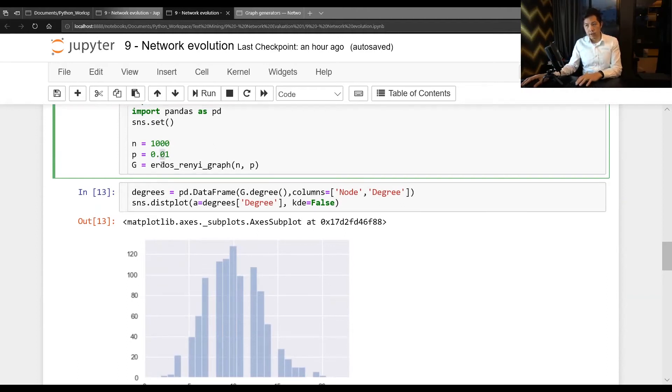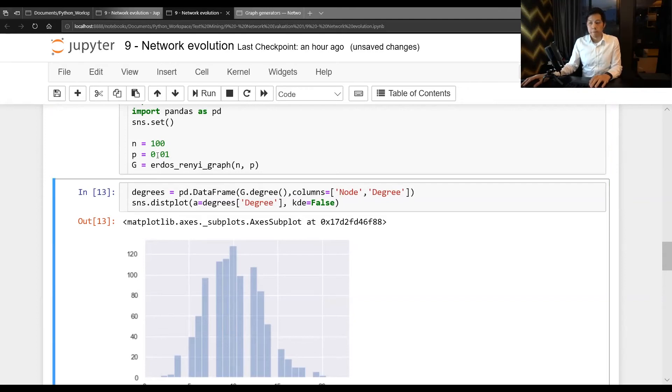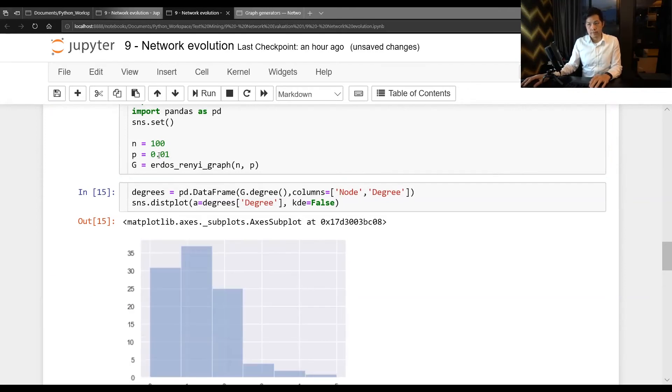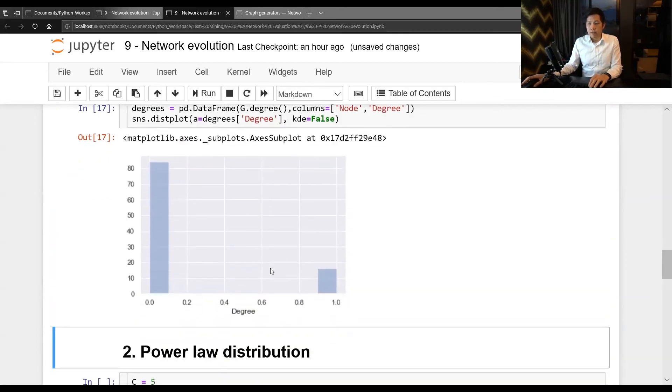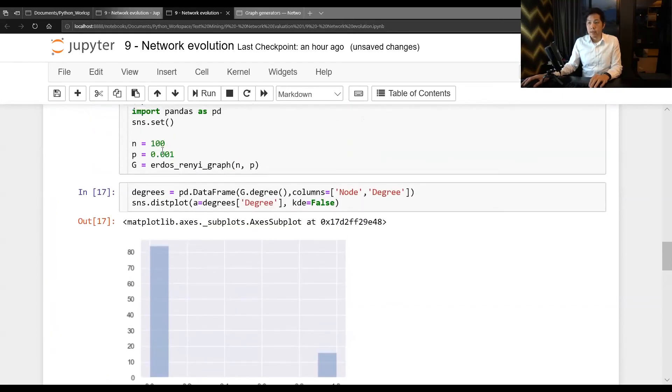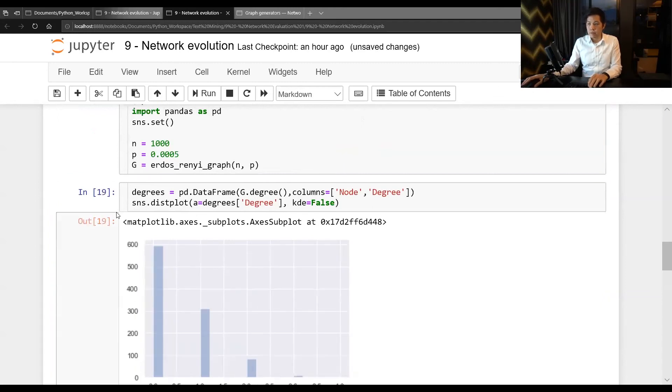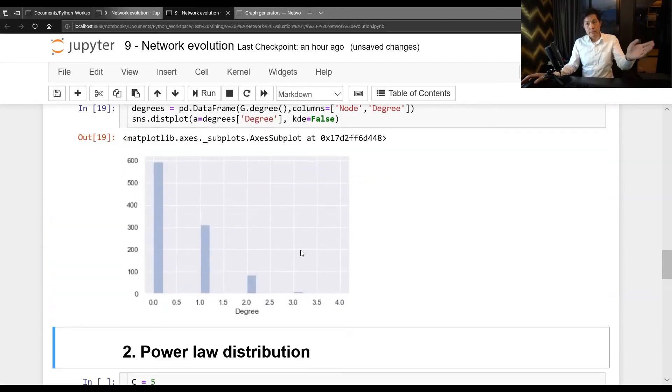You can see that when this become lower, like you have this equal to hundred and 0.01. When this N time P is less than one, when N time P is less than one, by 0.001, you have a graph that looks like this one. Look at this one like exponential.